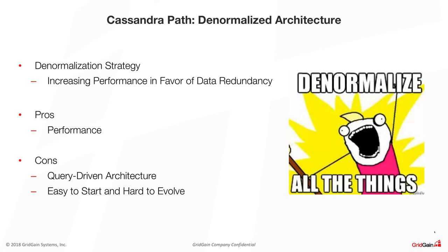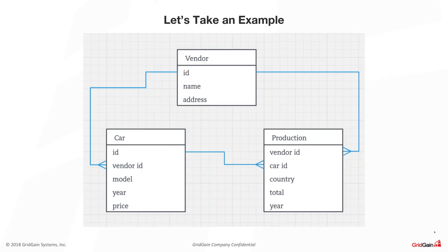Let's take a look at a simple example. Consider a classic database representing cars developed by specific vendors, where each car is produced in some location. We see this relational architecture where cars belong to a specific vendor, and we have relations between production, cars, and vendors. In Cassandra, we can also create the same tables, but it wouldn't make sense if done the same way as in relational databases, because your queries might not be optimal.